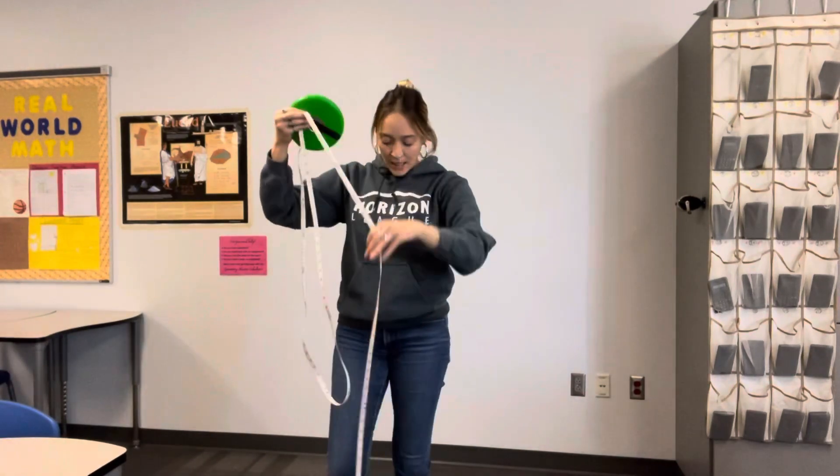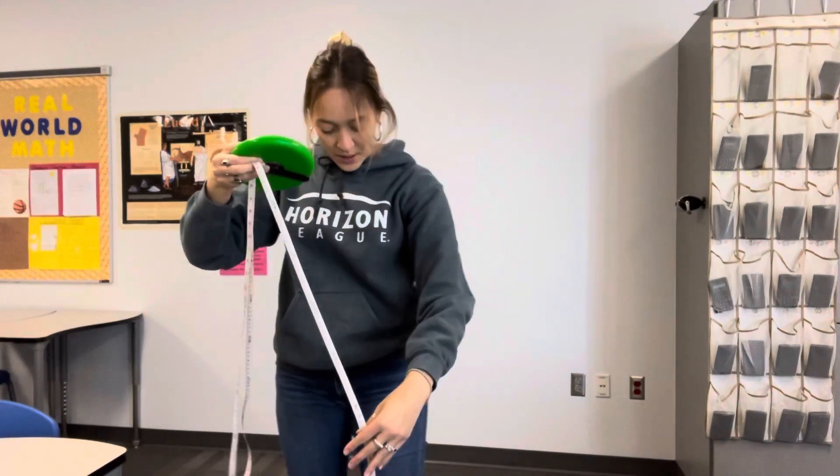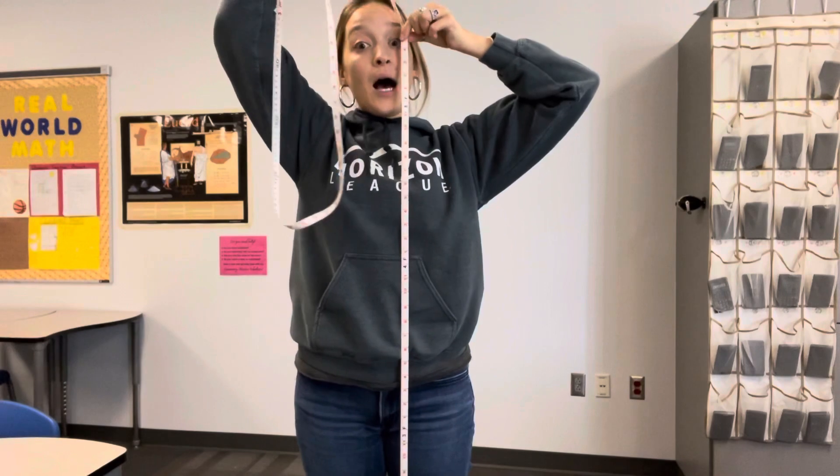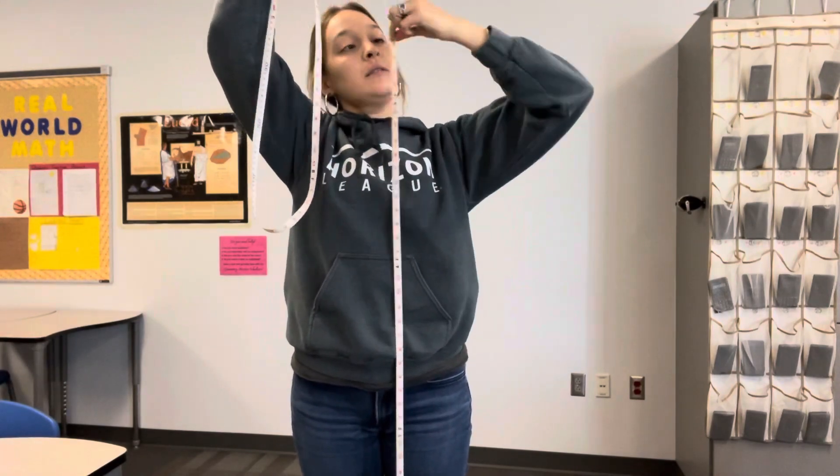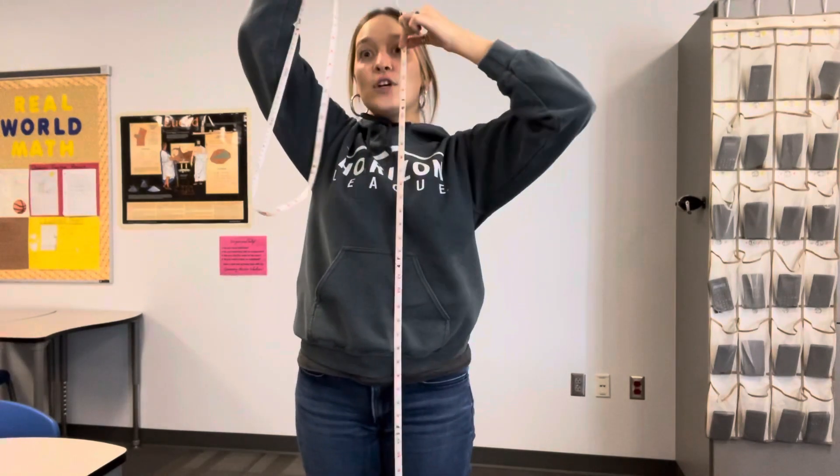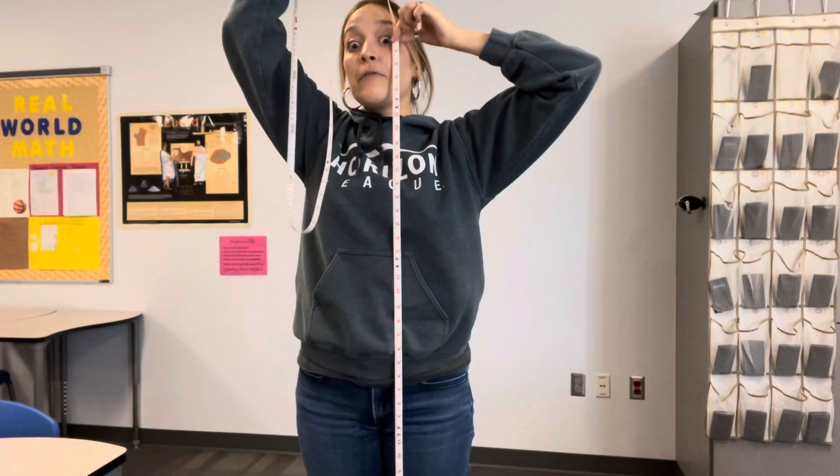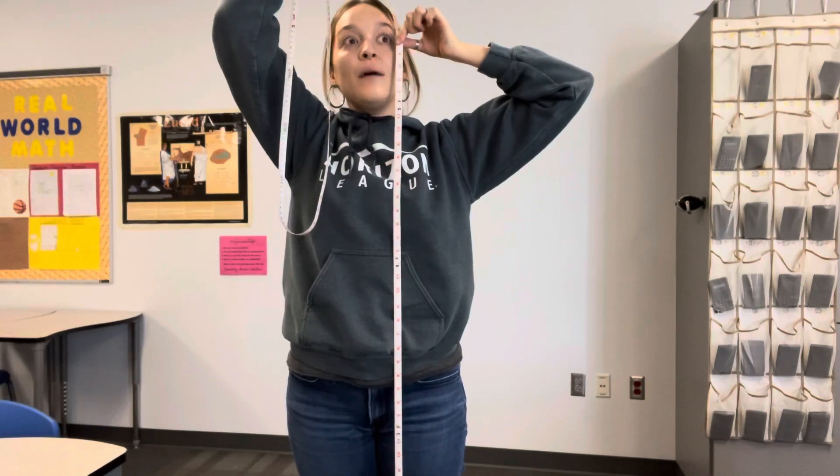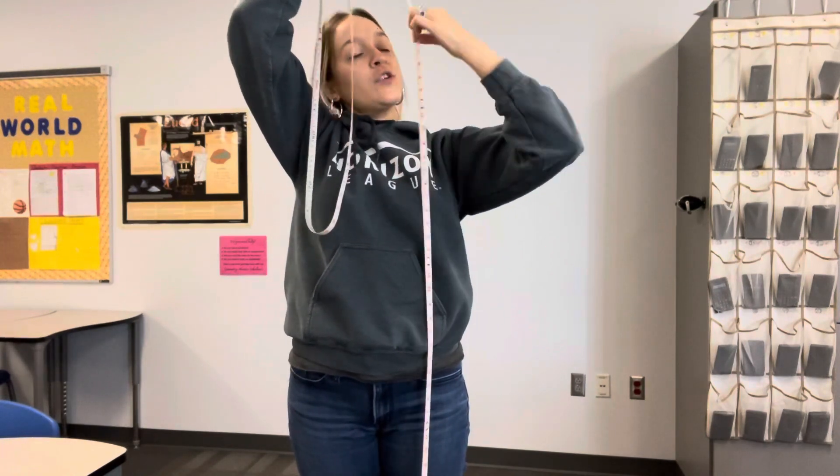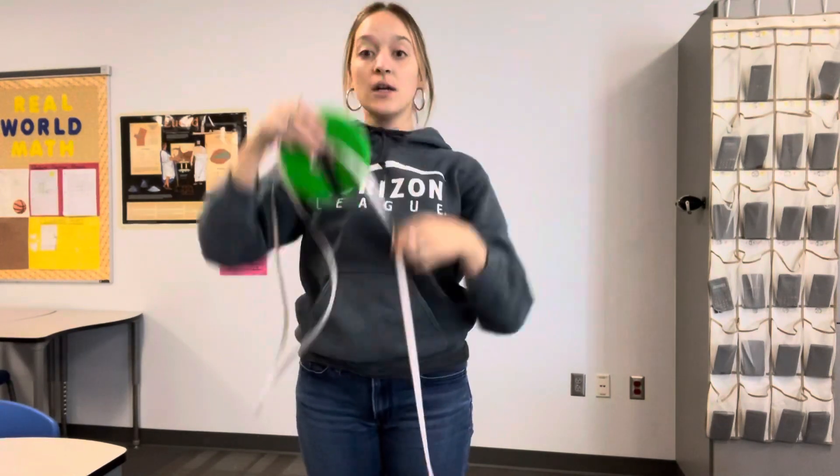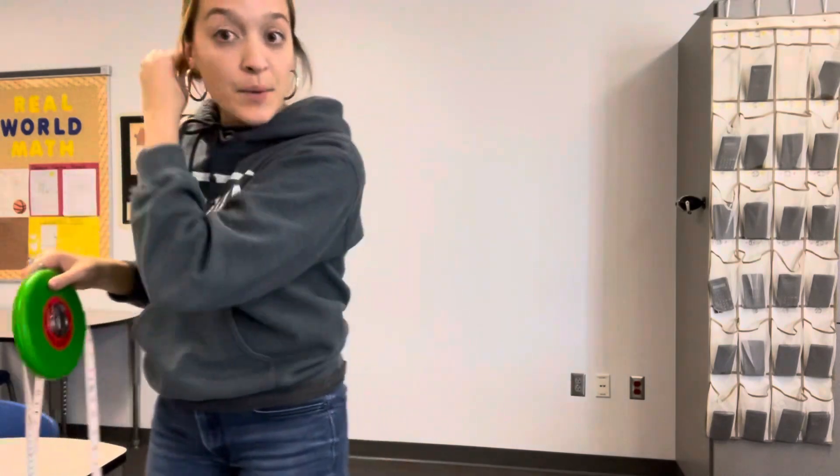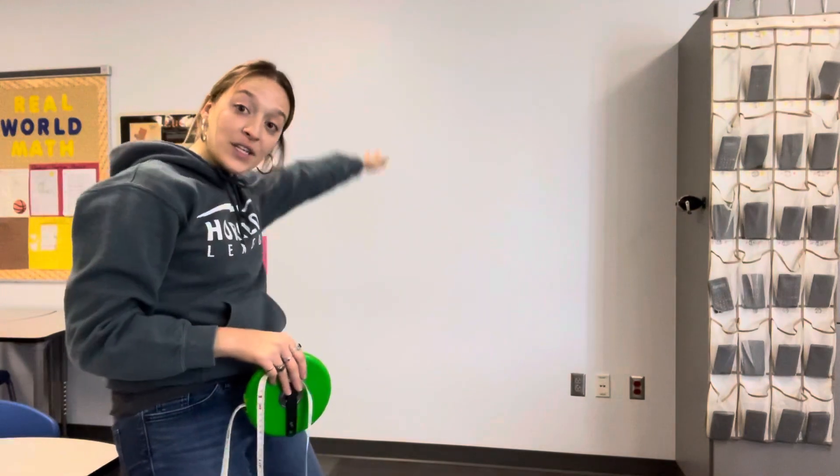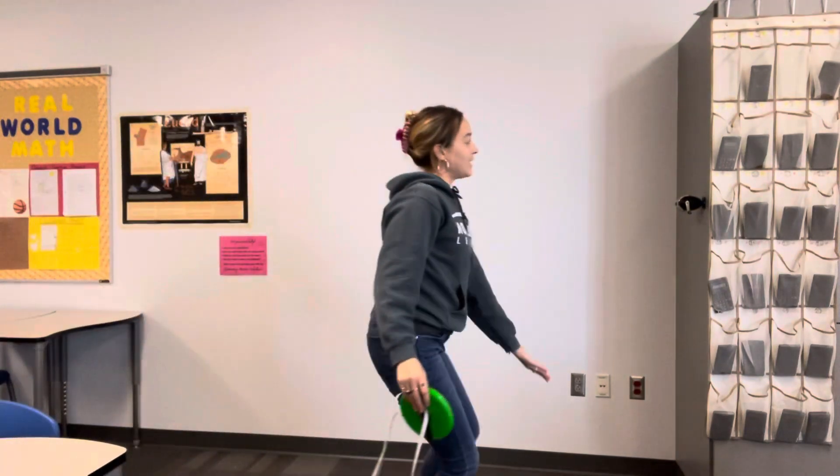If I go to where my eye height is, where my pupil is, it looks like it's five foot four, maybe five foot four and a half. I don't know, it's very difficult by myself, but you'll have a partner hopefully helping you out. It looks like five foot four. When I do my problem, I'm going to have to add the five foot four to the height over here.